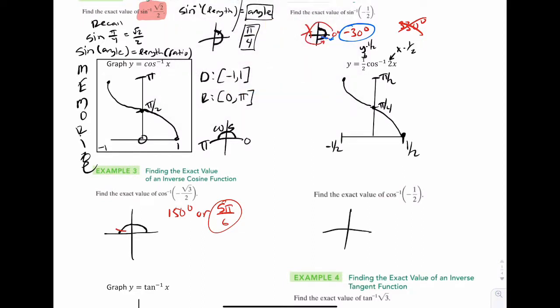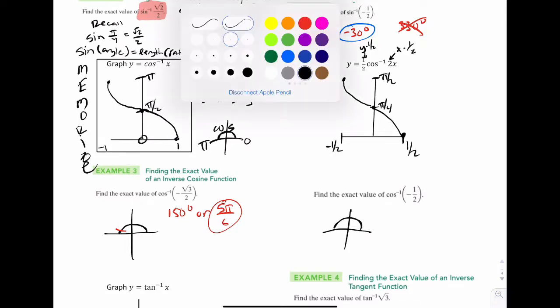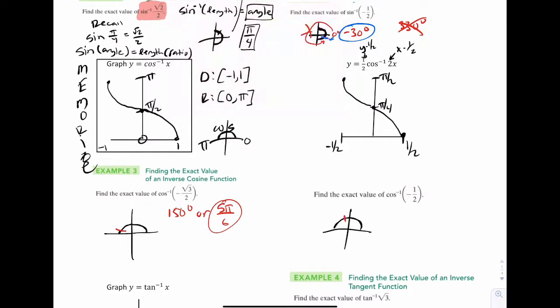So for the next one, cosine inverse of -1/2. Let's put our circle. -1/2 is right there. That angle would be 2π/3. Done.